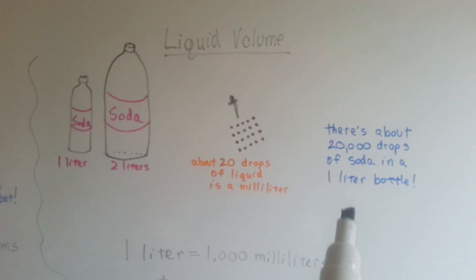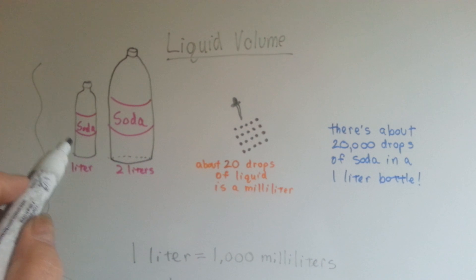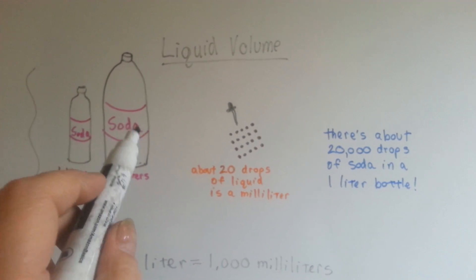Twenty tiny little drops. So there's about twenty thousand drops of soda in a one liter bottle. That means there's forty thousand in that one.